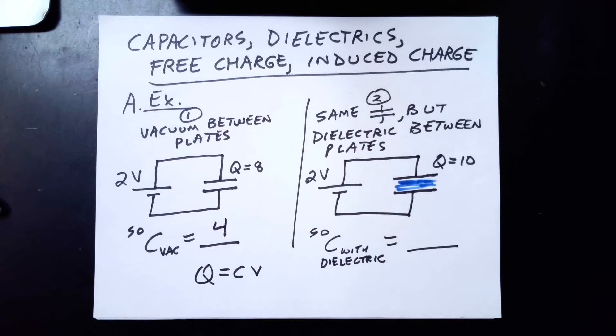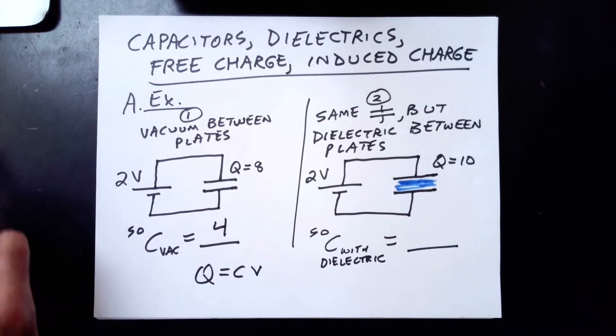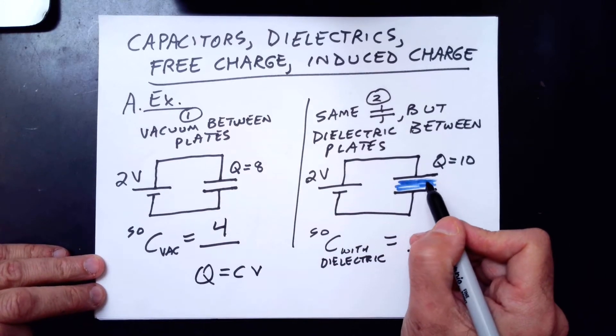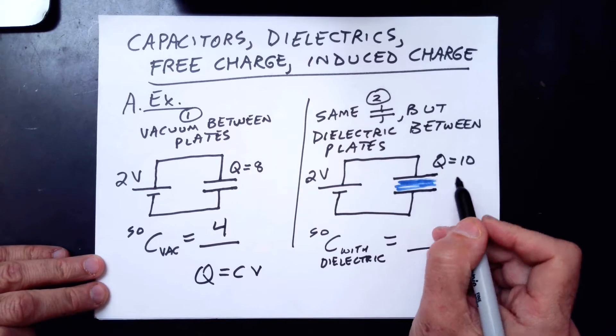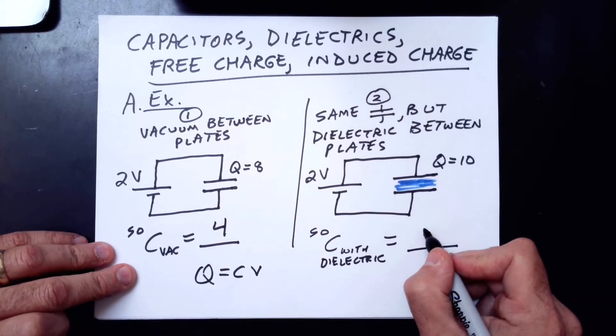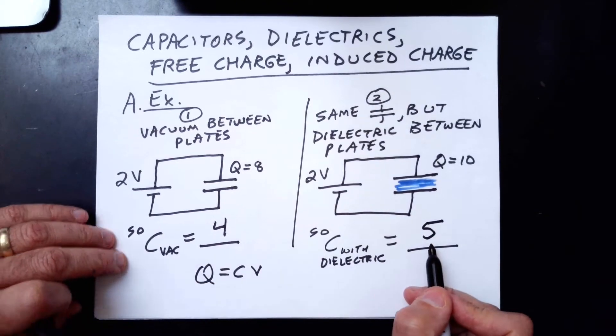We've inserted dielectric between the plates. And a dielectric means a non-conducting material. It could be solid or liquid or in between, like a semi-solid jelly. For example, sheets of paper, wood, ethanol. These are all dielectrics. We insert it between the plates. And now, even though it's connected to the same battery, and even though it's the exact same capacitor, we haven't changed any of its geometry, we measure more charge on it. So now the charge is 10.